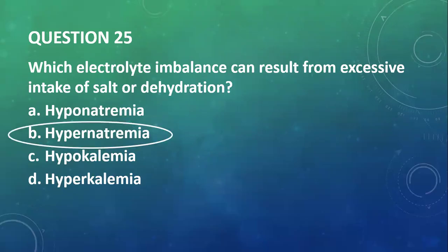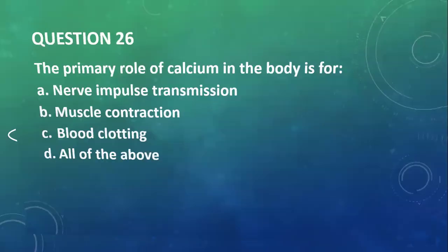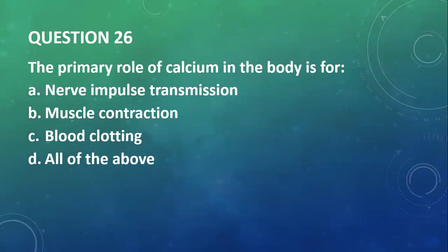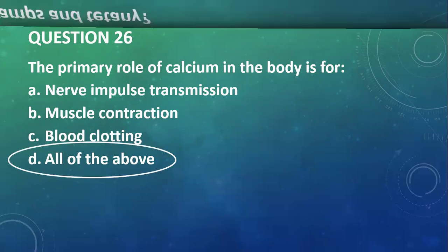Question 25: Which electrolyte imbalance can result from excessive salt intake or dehydration? That will be hypernatremia. Question 26: The primary role of calcium in the body is for nerve impulse transmission, muscle contraction, clotting? All of them. If you look at it, calcium does all of that, so the answer will be all of the above.